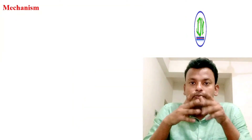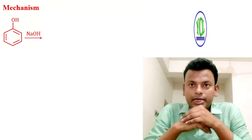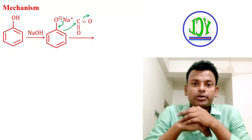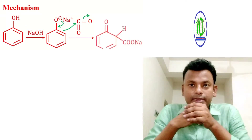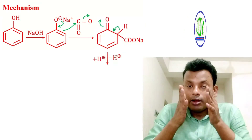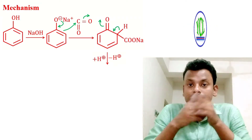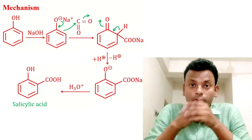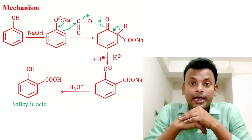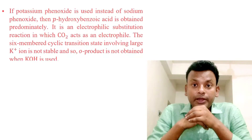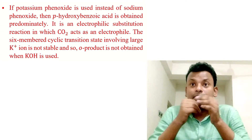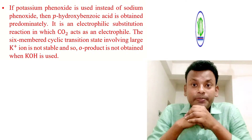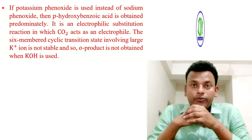Mechanism: phenol reacts with sodium hydroxide to give sodium phenoxide. Sodium phenoxide reacts with carbon dioxide to give an addition product; loss of H+ and addition of H+ gives the intermediate product, and hydrolysis gives salicylic acid. If potassium phenoxide is used instead of sodium phenoxide, then para-hydroxybenzoic acid is obtained predominantly.